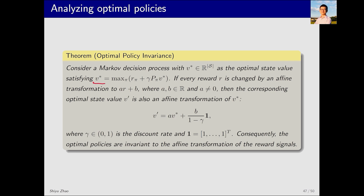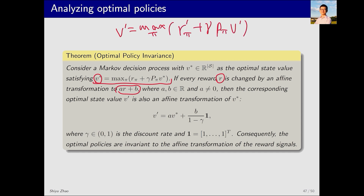First, let's examine this Bellman optimality equation, whose optimal solution is V star. Having changed every R to AR plus B, the corresponding Bellman optimality equation becomes V prime equals max over pi of (r_pi prime plus gamma p_pi V prime). Here r_pi prime is different from the previous r_pi. It is then observed that V prime, the solution to this new Bellman optimality equation, relates to V star in such a manner that it is multiplied by an additional A and then plus an additional term. When calculating the optimal policy, we need to consider the action value. Knowing V prime allows for the calculation of each action value.